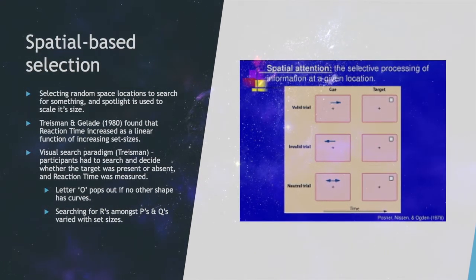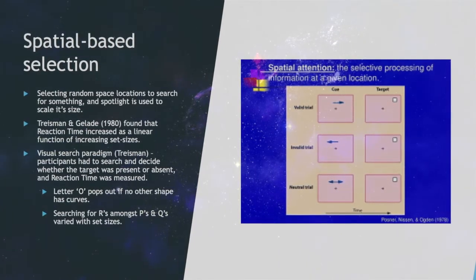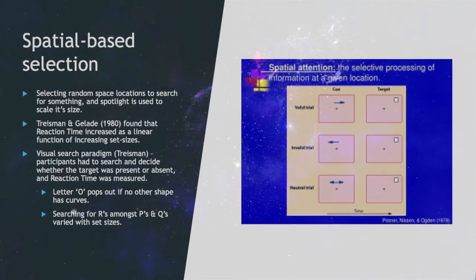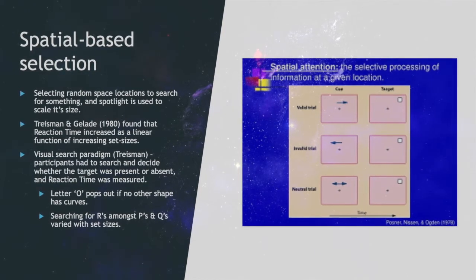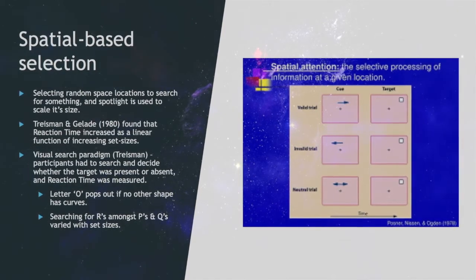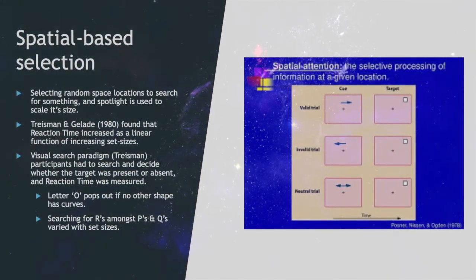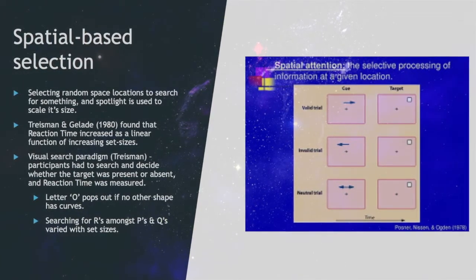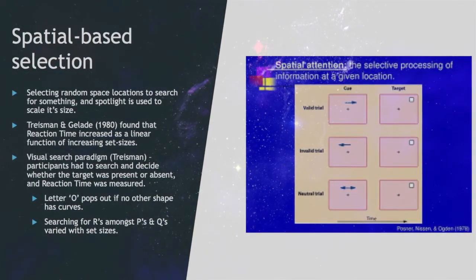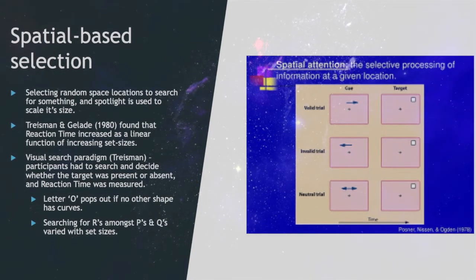Treisman and Gillade in 1980 found that reaction time increased as a linear function of increased set sizes. The Visual Search Paradigm, according to Treisman, directed participants to search and decide whether the target was present or absent, and reaction time was measured. Treisman found that the letter O popped out if no other shape had curves, and that searching for R's amongst P's and Q's varied with increased set sizes.